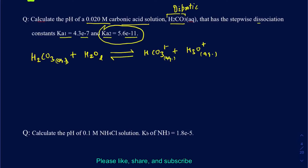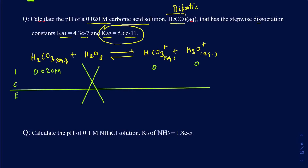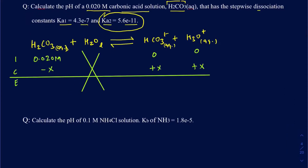I'm going to make an ICE table because that's just easier to deal with. Initially, we are told we are starting out with 0.020 molar carbonic acid. Water is a liquid so it's not going to be part of the equilibrium constant expression. When looking at your products, you don't have any of those in the beginning. Suppose I'm losing X amount of my reactant — in losing X amount, you're going to be making X amount of both products. That's because it's a one-to-one mole ratio. At equilibrium, I'm getting 0.02 minus X for the reactant and X and X for the products.